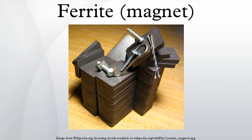Spinel ferrites usually adopt a crystal motif consisting of cubic close-packed oxides with A cations occupying one-eighth of the tetrahedral holes and B cations occupying half of the octahedral holes. If one-eighth of the tetrahedral holes are occupied by B cations, then one-fourth of the octahedral sites are occupied by A cations and the other one-fourth by B cations — this is called the inverse spinel structure.